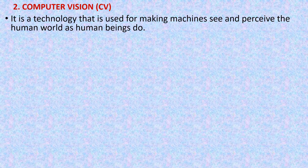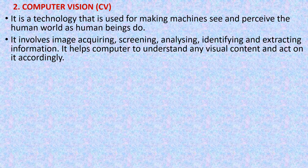The next domain of artificial intelligence is computer vision or CV. It is a technology that is used for making machines see and perceive the human world as human beings do. That means the machines will be able to see what we want them to see. It involves image acquiring, screening, analyzing, identifying and extracting information.